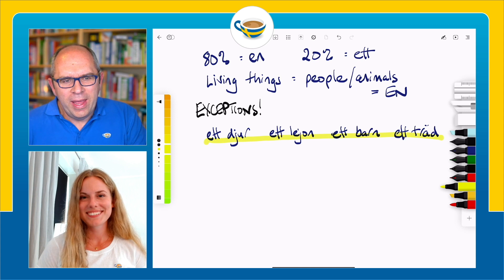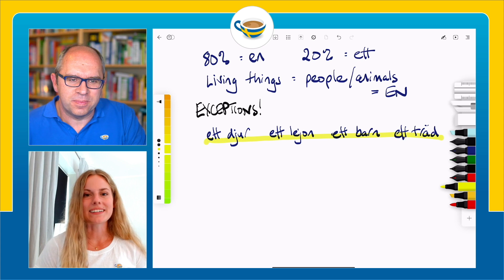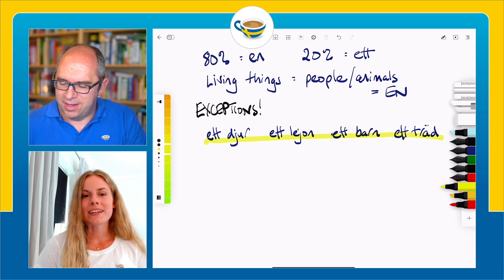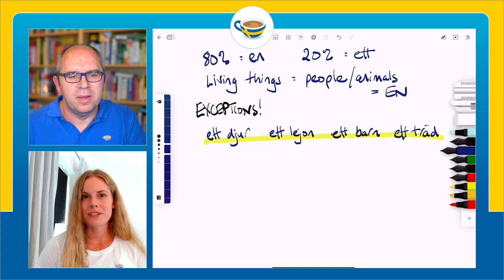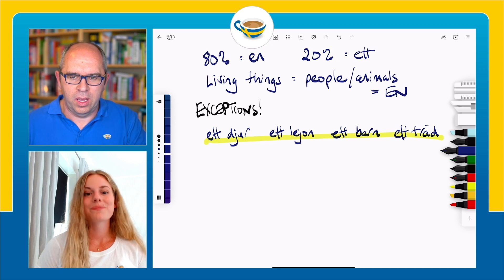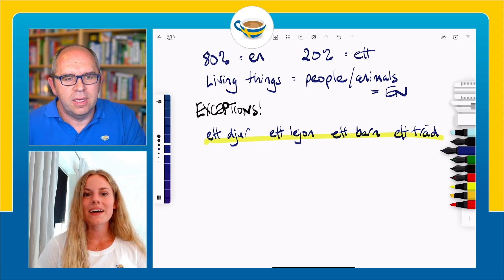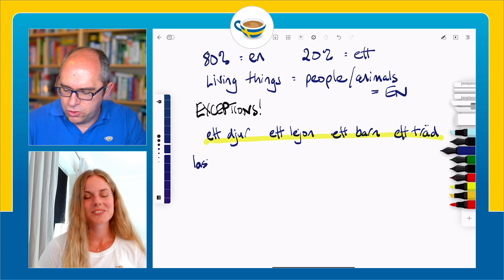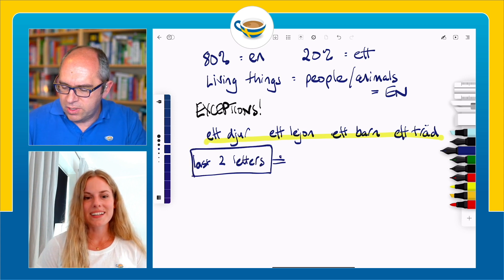Is there any other way to kind of guess — can we make an educated guess about some words? Yeah. We also have a lot of nouns that aren't people, animals, or living things at all that are n-words. We can sort of guess which words are n-words or ett-words depending on the letters they end with — specifically the last two letters.